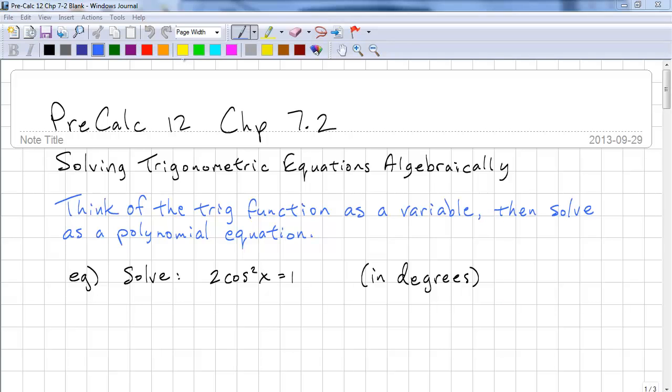This is Pre-Calculus 12 Chapter 7.2. This time we're going to be looking at solving trigonometric equations algebraically. The best way to do this is to think of the trig function as a variable, then solve as a polynomial equation, then substitute the trig function back in for your final solve.